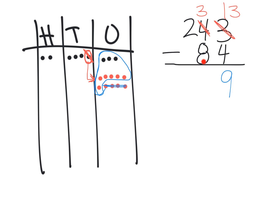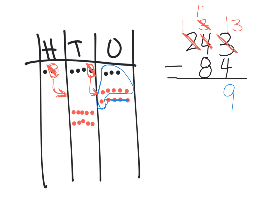Now we have 3 tens, and we're supposed to take away 8 tens. We used to have 4, but now we have 3. Since we can't take away 8 tens, we need to do regrouping again. I'm going to take 1 of the hundreds and cash it in for 10 tens: 1, 2, 3, 4, 5, 6, 7, 8, 9, 10. That hundred is no longer there — it got cashed in. We used to have 2 hundreds, now we only have 1. We used to have 3 tens, but now we have 13 tens.